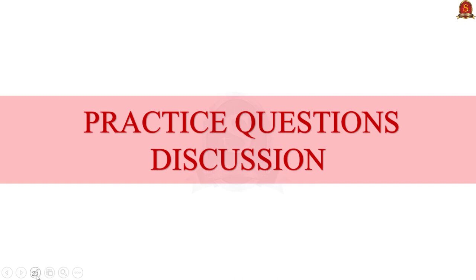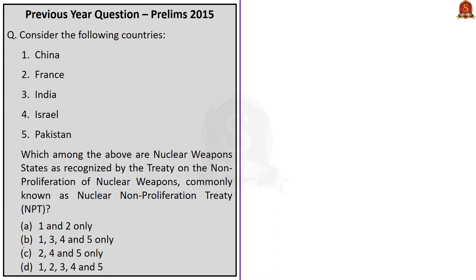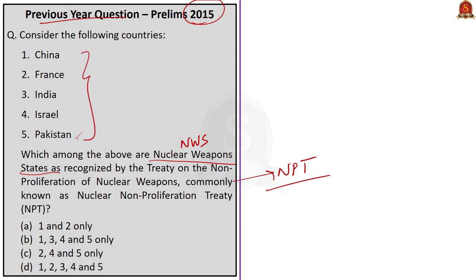With the news article discussions complete, we move to practice questions. The first is a previous year prelims 2015 question: 'Consider the following countries — China, France, India, Israel, Pakistan — which among the above are nuclear weapon states as recognized by the NPT?' The NPT recognizes five declared nuclear weapons states: those that manufactured and exploded a nuclear weapon before 1967 — China, France, Russian Federation, UK, and USA.